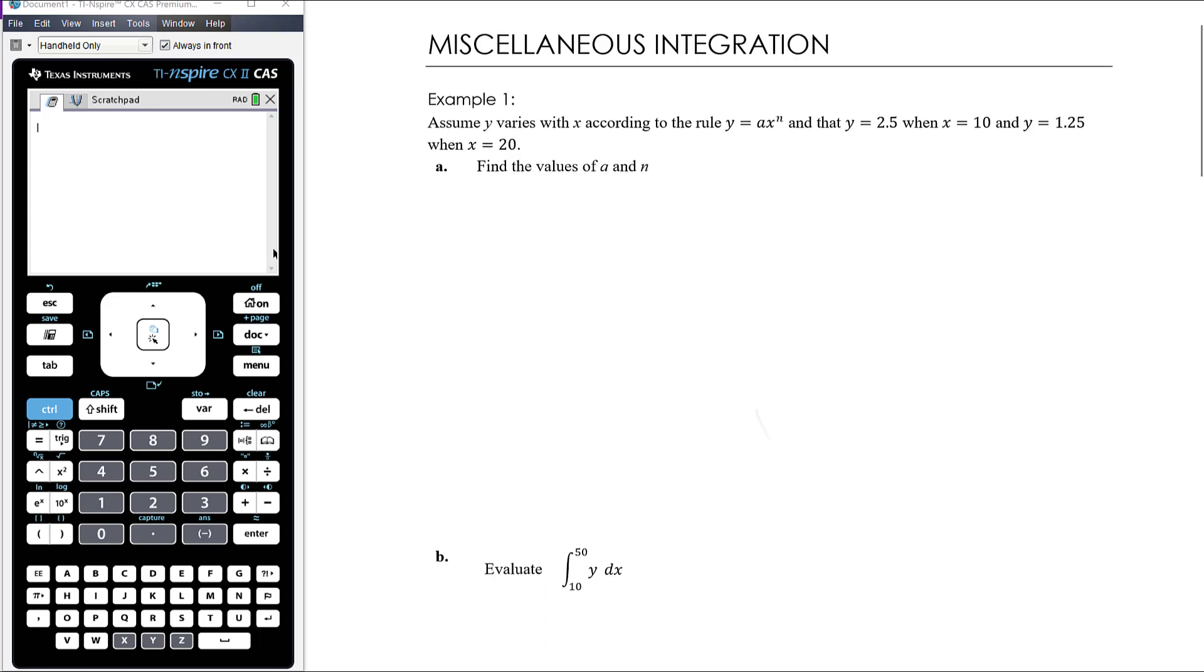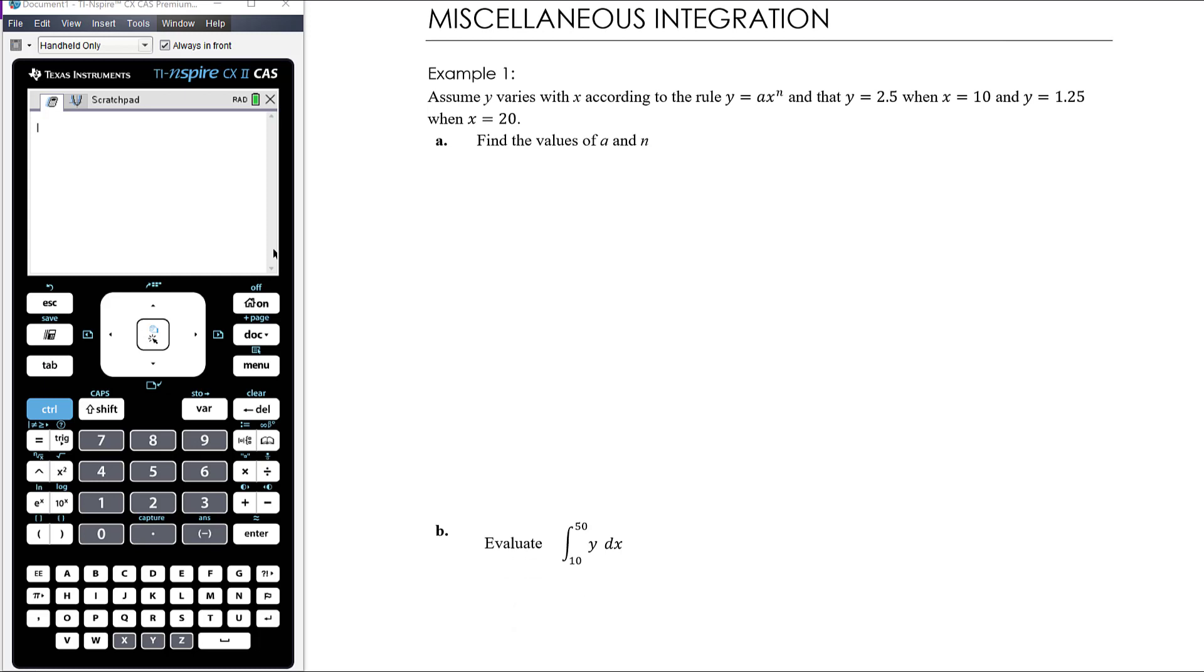Let's do this example one. Assume y varies with x according to the rule y equals a times x to the power of n, and that y equals 2.5 when x equals 10, and y equals 1.25 when x equals 20. Part a is to find the values of a and n.